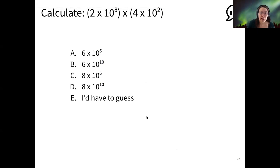Okay, let's do one to try. So 2 times 10 to the 8 times 4 times 10 to the 2. Okay, I see most votes for D, 8 times 10 to the 10. That's exactly right.